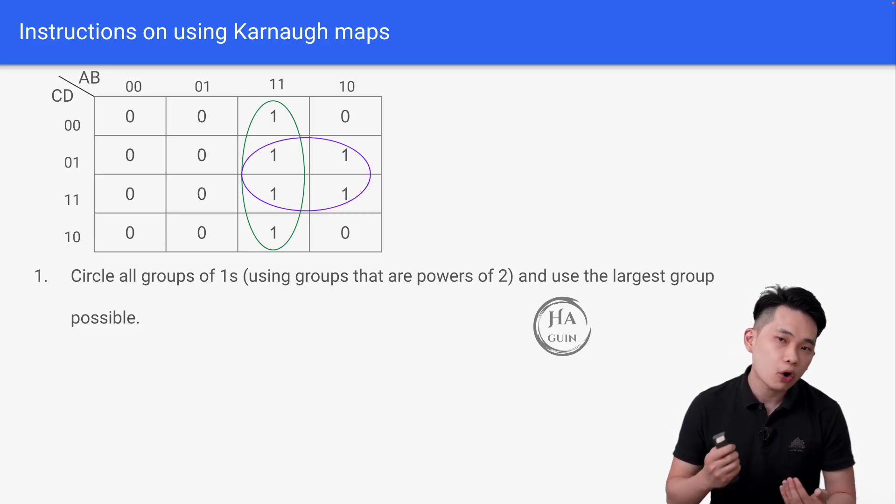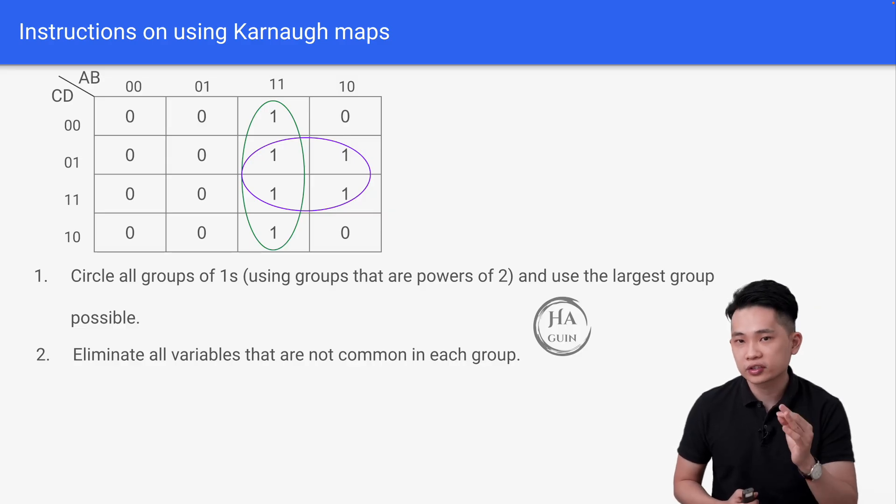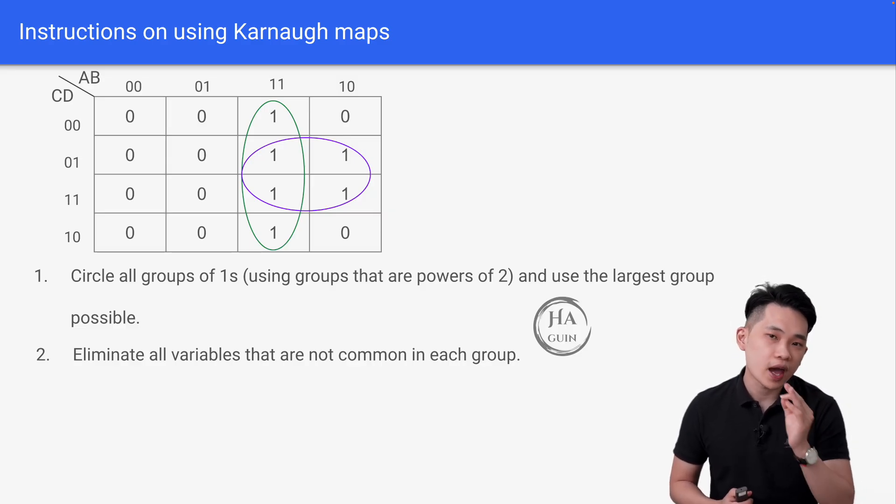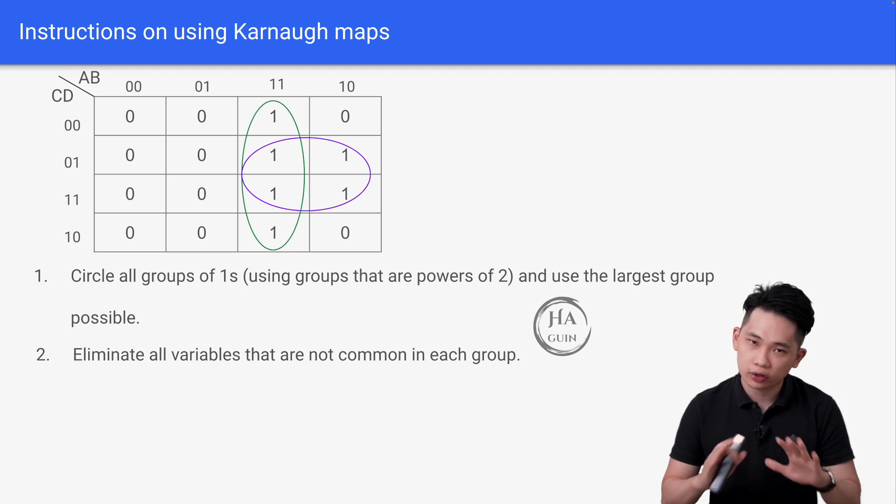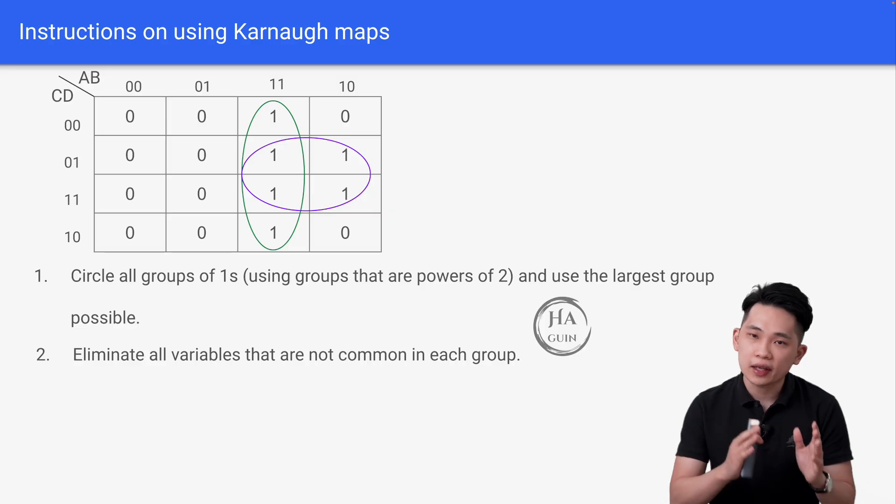Then we eliminate all variables that are not common in each group. Let's say for the green circle, we know that we can eliminate C and D variables since they are not constant. And for the purple circle, we can eliminate B and C variables since only A and D remain as one in the purple circle.